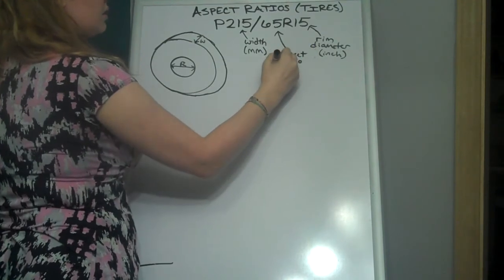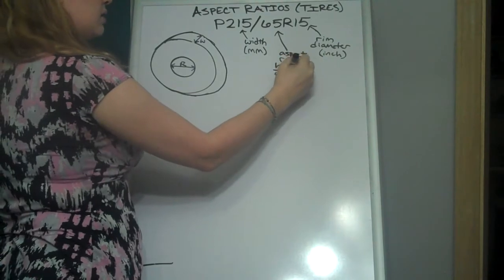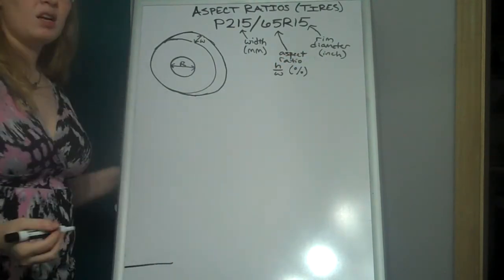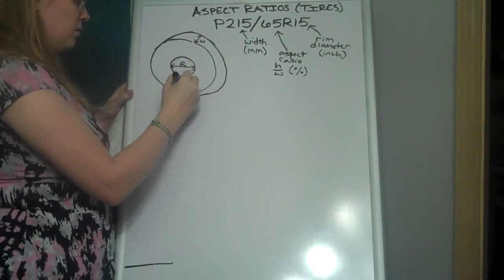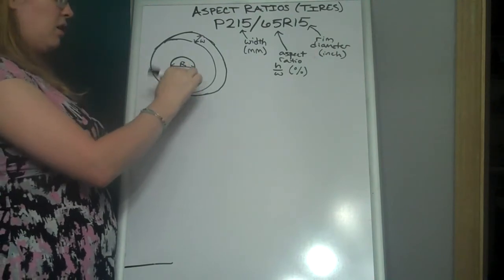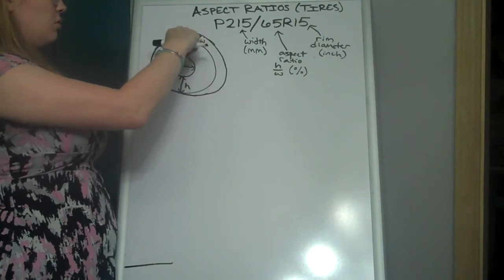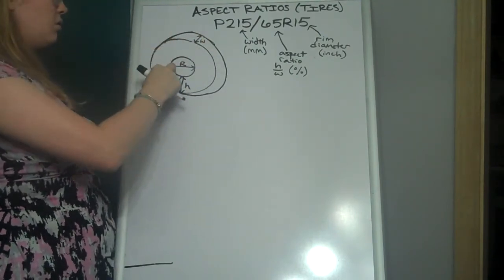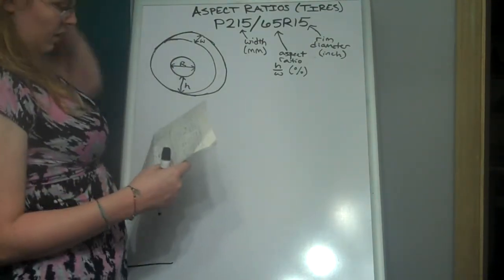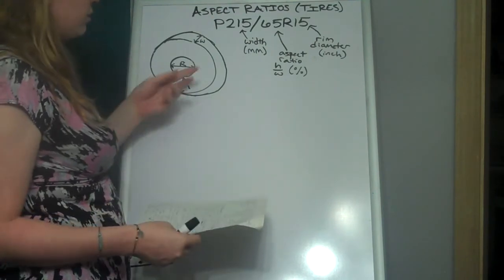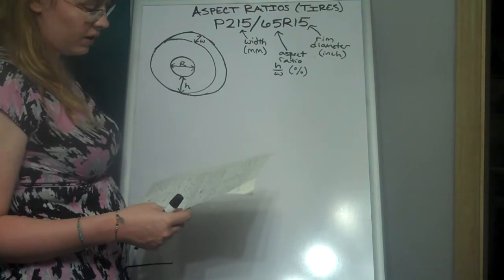And this time it's height over width. And it is as a percent. And when it's talking about height over width, the width I said was here, and the height is like that. And if you notice, since this is a circle, all of this would have the same measure. That's all the same measure of height. So we're going to take this info, the width, the rim diameter, and the aspect ratio of height over width, and use it to find the circumference.